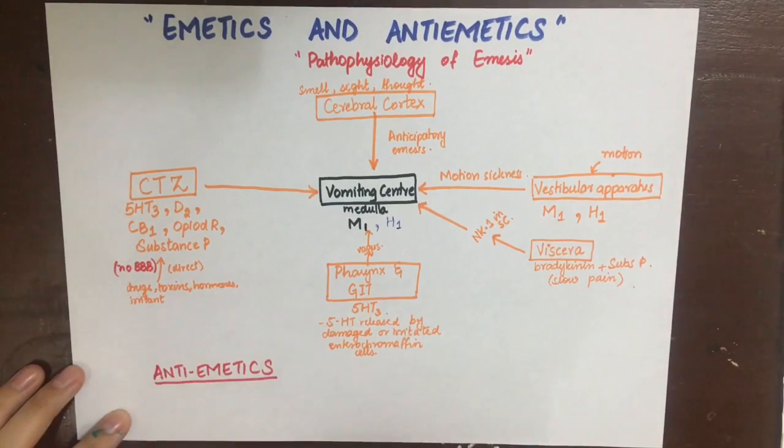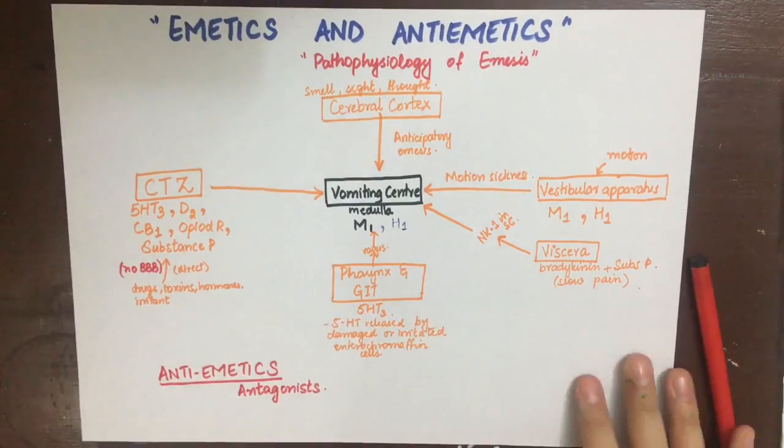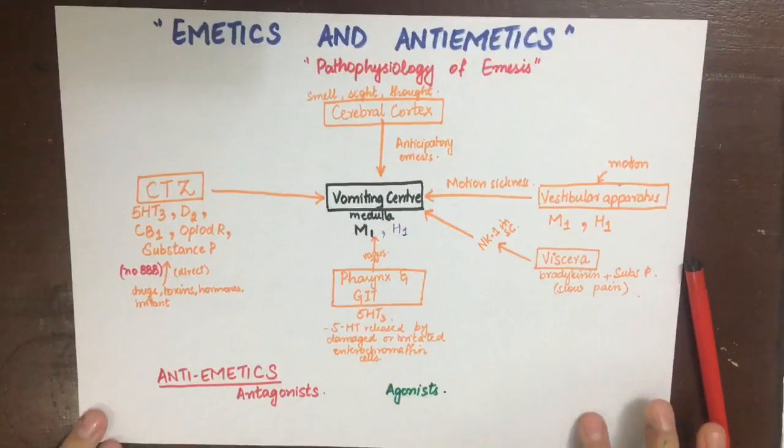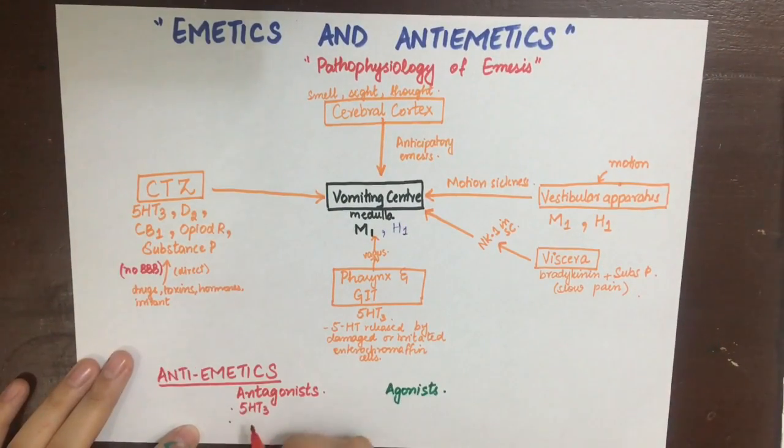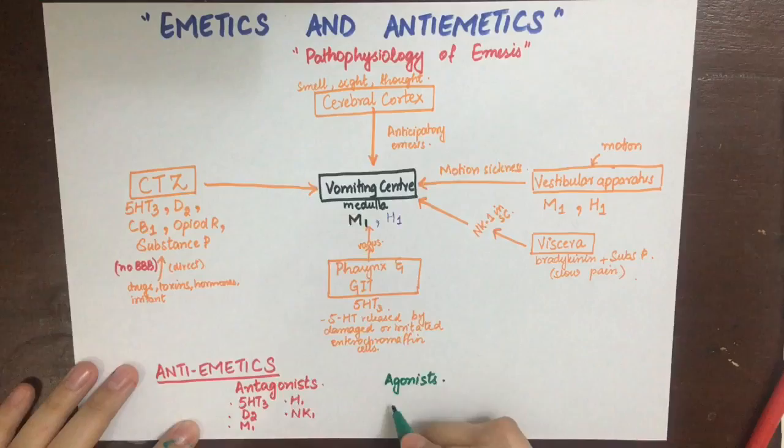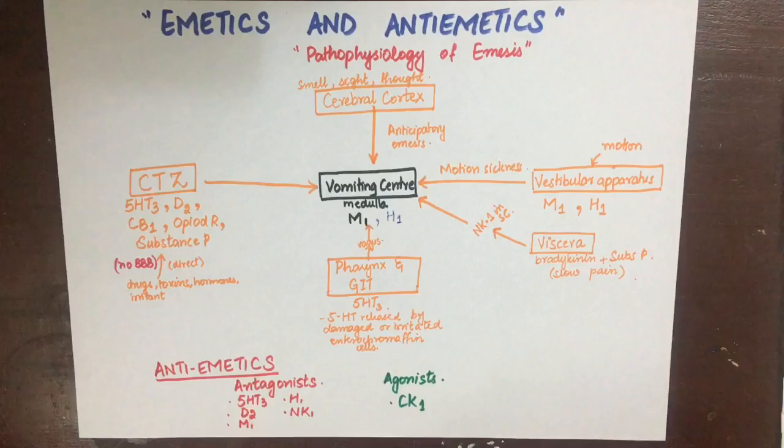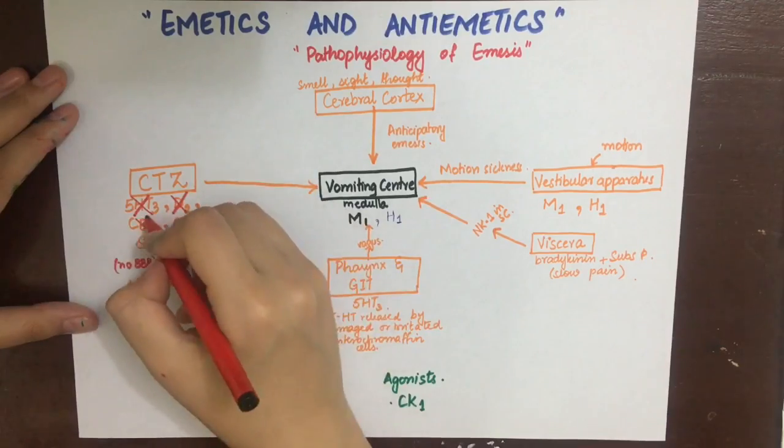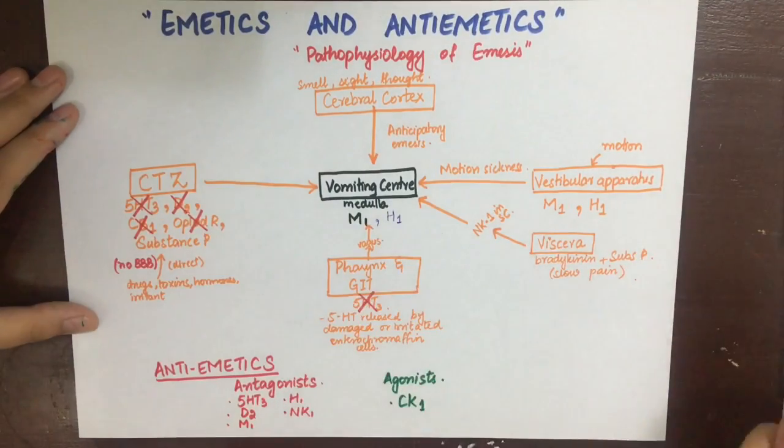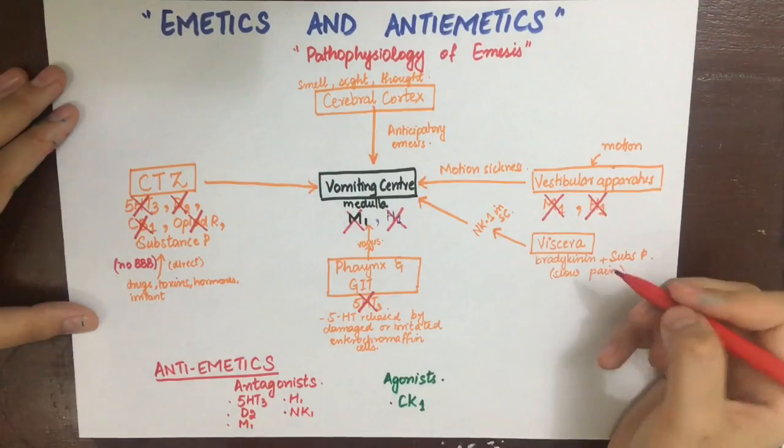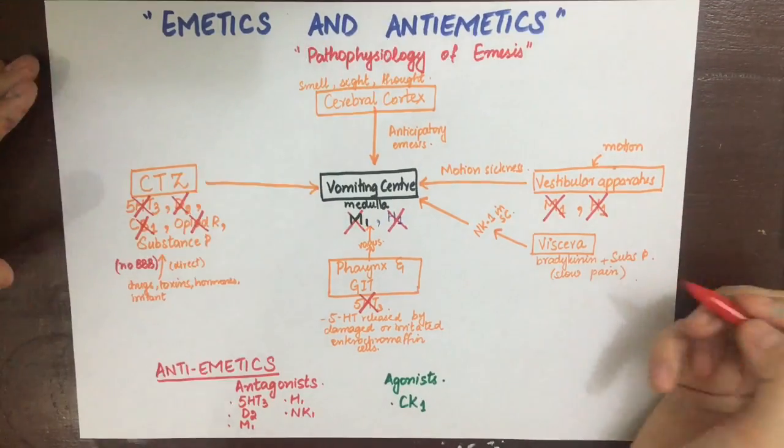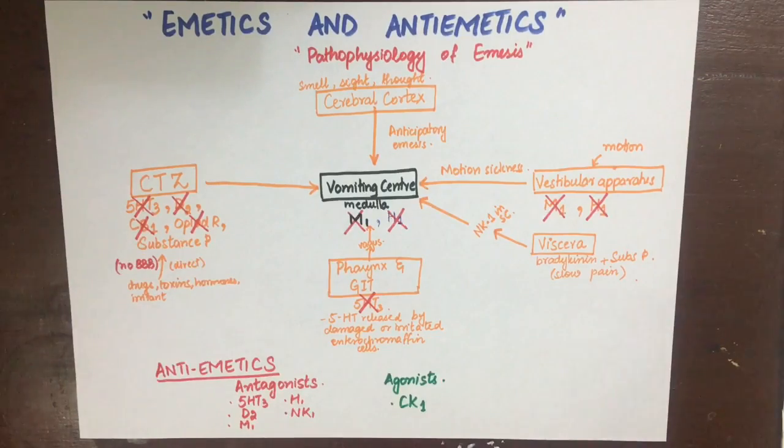Looking at this pathway, we can see where we can put some drugs to cause this pathway to stop and have antiemetic actions. The antagonists we can use are 5-HT3 antagonists, D2 antagonists, M1 antagonists, H1 antagonists, and NK1 antagonists. The agonists we can use to stop vomiting are cannabinoid agonists. These receptors are basically responsible for pleasure, eating behaviors, and overall mood of the patient. If we antagonize all these receptors, we will stop vomiting.